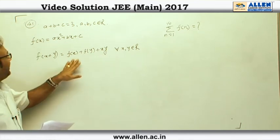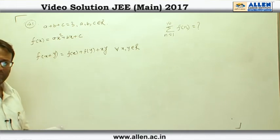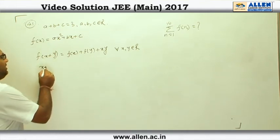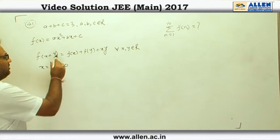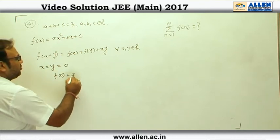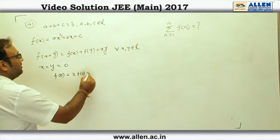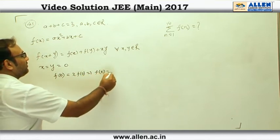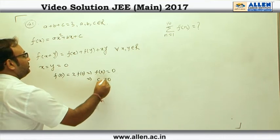First of all, from here I guess we can easily get f(0). If we put x equals to y equal to 0, the left hand side becomes f(0) and the right hand side becomes twice f(0), which gives us f(0) as 0, which means that c is equal to 0.